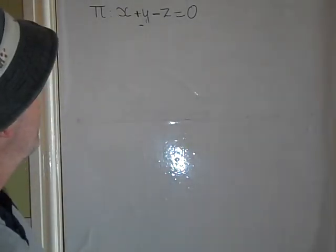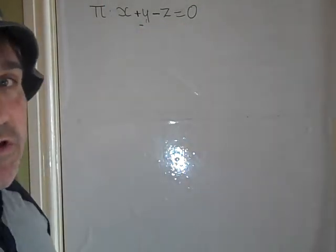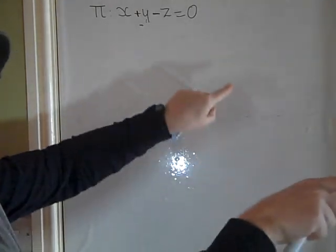Okay, so we have a plane x plus y minus z equal to 0, and we would like to know which are the two vectors that span this plane.